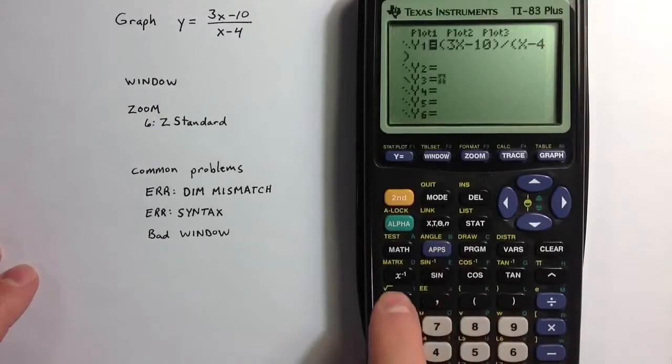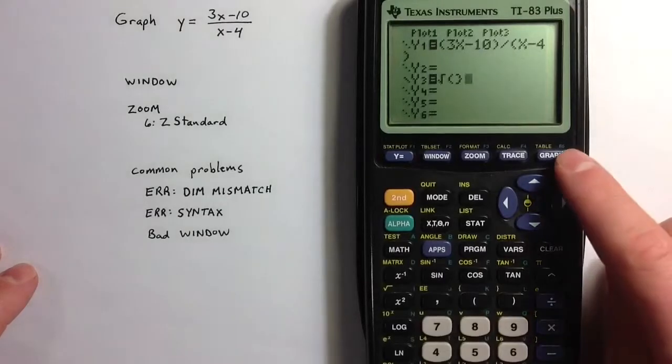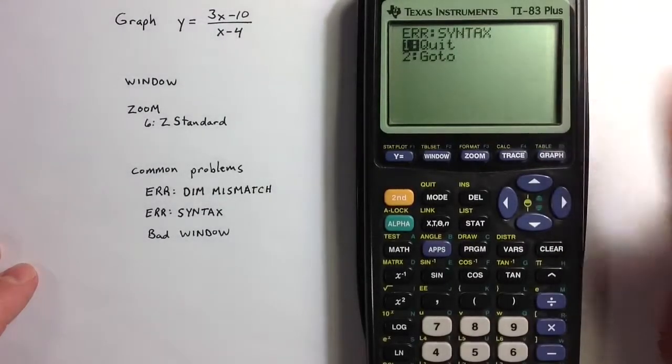For example, if I enter the square root of a curly brace, that doesn't make any sense, and hitting the graph screen, we see a syntax error come up.